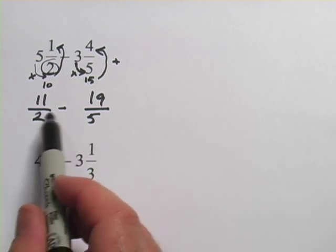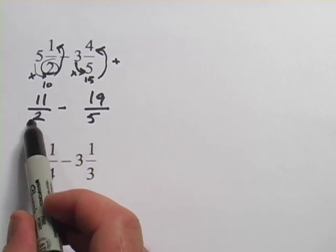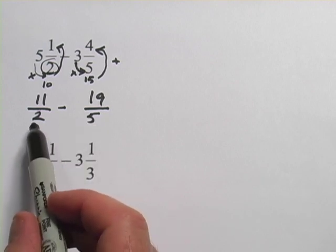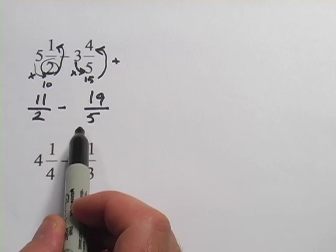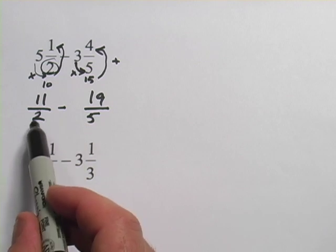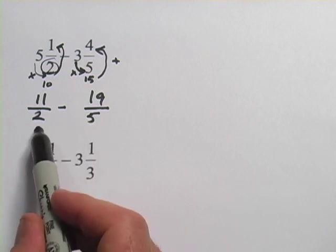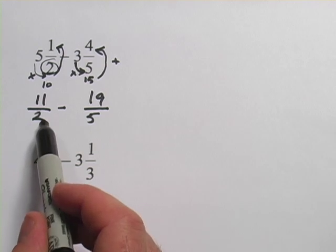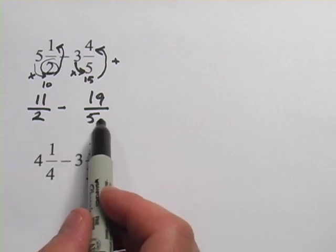We need to do another step before we can actually do the subtraction, because you'll notice the denominators are not the same. And you cannot add or subtract fractions until the number on the bottom, the denominator, is the same. When I look at these, I think probably the nearest denominator I could get them both to be would be 10. If I multiplied this 2 by 5, that would be 10. If I multiplied this 5 by 2, that would be 10.